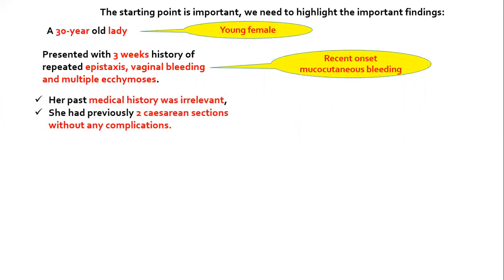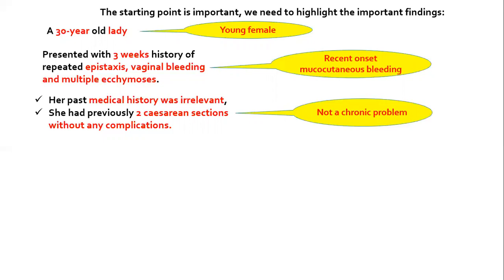The past medical history is irrelevant and she had two caesarean sections without bleeding. This tells us she had no chronic problem — very important. If we were thinking of a hemostatic problem since infancy or childhood, we would expect the patient to bleed when exposed to a surgical procedure. The absence of bleeding after caesarean section suggests the patient is not having a long-standing bleeding tendency; her condition seems recent.